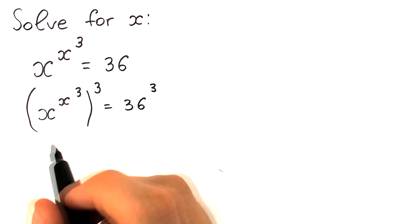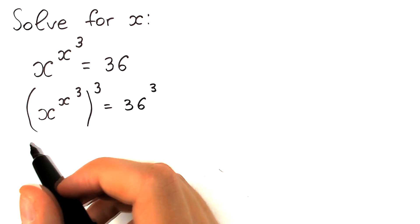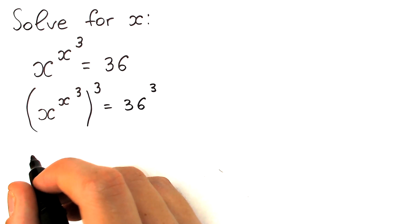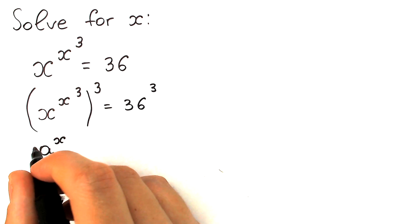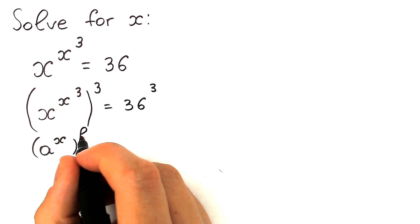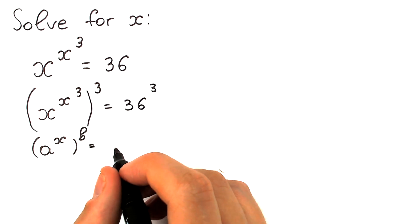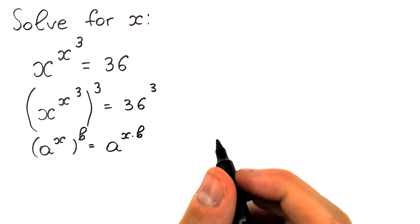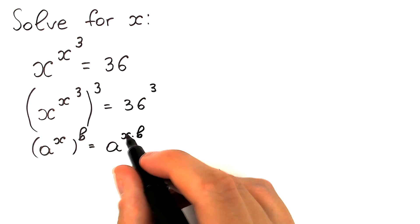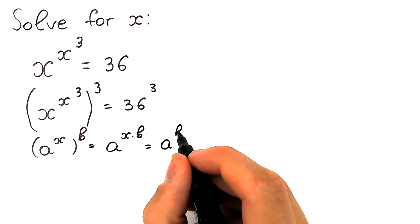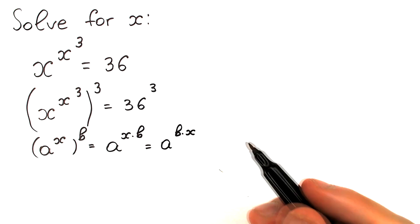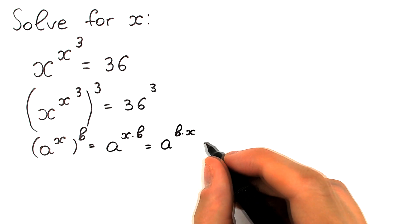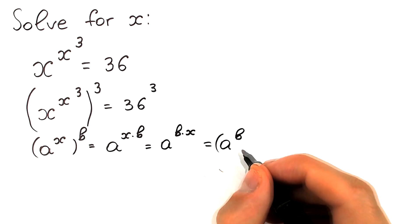Now we need to know a really interesting trick — some call it the rule of interchange. If we have a to the power x, and we raise this to the power b, we can write it as a to the power x times b. We can swap that product, writing it as a to the power b times x — because 2 times 3 equals 3 times 2. And according to this, we can write it as a to the power b, raised to the power x. So we can easily swap x and b in the exponents.